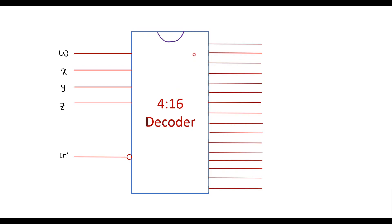The 4-to-16 decoder has 16 outputs: Y0, Y1, Y2, Y3, Y4, Y5, Y6, Y7, Y8, Y9, Y10, Y11, Y12, Y13, Y14, and Y15.